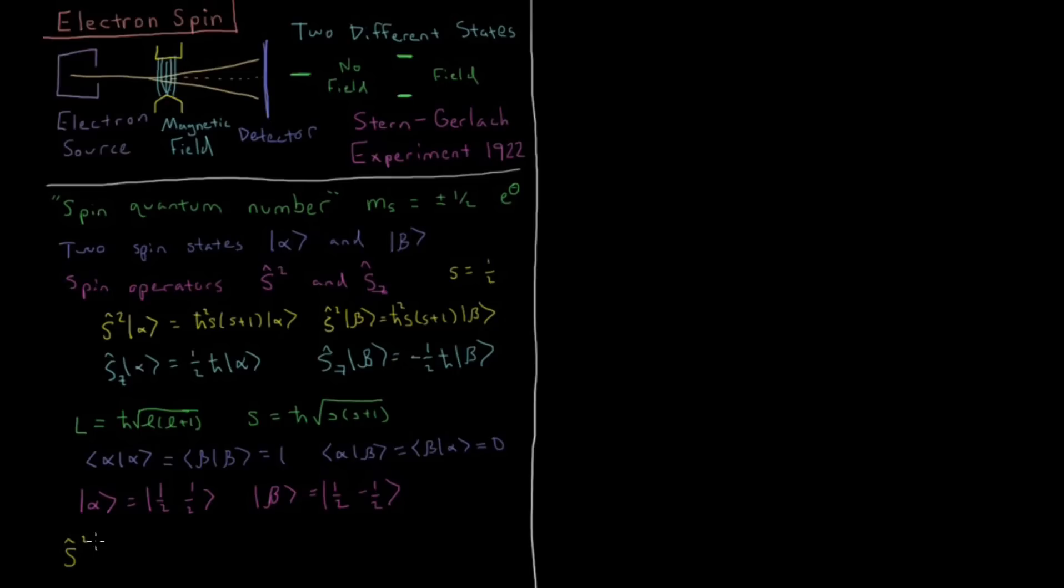Then we can say that S squared, acting on a ket of S and M sub S, is equal to H bar squared S times S plus one, times the same ket. And that S sub Z, acting on S and M sub S, is going to be equal to H bar M sub S, S M sub S. And then those are similarly normalized orthonormal to each other as we've seen there, where we have S M sub S, so the bra is S M sub S, the ket is S M sub S prime, that equals delta M sub S, M sub S prime, the Kronecker delta for the value of M sub S.